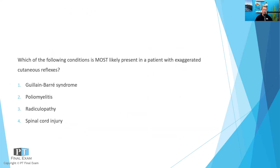All right, here we go. Which of the following conditions is most likely present in a patient with exaggerated cutaneous reflexes? One: Guillain-Barré syndrome. Two: poliomyelitis. Three: radiculopathy. Or four: spinal cord injury.